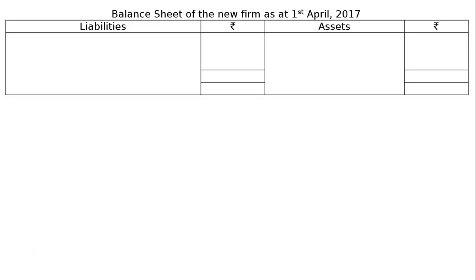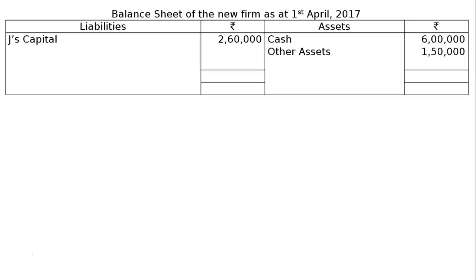Balance sheet of the new firm as at 1st April 2017: Cash — opening balance Rs. 2 lakh plus M's contribution of Rs. 4 lakh (Rs. 3 lakh capital and Rs. 1 lakh goodwill) equals Rs. 6 lakh. Other assets Rs. 1,50,000. On the liability side: J's capital Rs. 2,60,000; K's capital Rs. 1,90,000; M's capital Rs. 3,00,000. Both sides total Rs. 7,50,000.